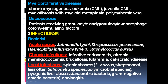Infections causing splenomegaly — bacterial: acute sepsis with Salmonella typhi, Streptococcus pneumoniae, Haemophilus influenzae type B, Staphylococcus aureus. Chronic infections: infective endocarditis, chronic meningococcemia, brucellosis, tularemia, cat scratch disease. Local infections: splenic abscess from Staphylococcus aureus, Streptococcus, Salmonella species, polymicrobial causes; pyogenic liver abscess from anaerobic bacteria and gram-negative enteric bacteria; cholangitis.